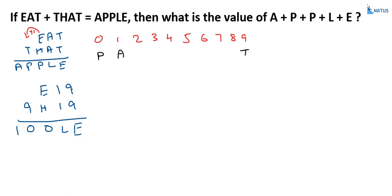If you observe, 9 plus 9 is equal to 18. So, the value of E must be 8. Now, instead of E, let us take this as equal to 8. You will replace these values. So, 8 is allocated to E.